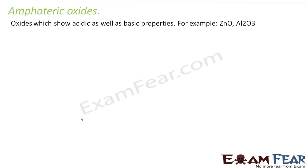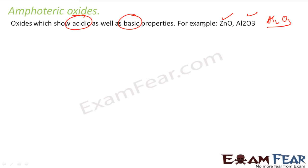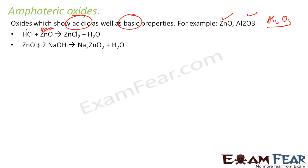We will now understand amphoteric oxides. Amphoteric oxides are those oxides which show both acidic and basic properties. For example, zinc oxide and Al₂O₃ — aluminum oxide — both are acidic and basic; they show both properties. In hydrochloric acid, if you put zinc oxide, you get zinc chloride plus water — here zinc oxide is acting as a base. But zinc oxide plus sodium hydroxide gives sodium zincate plus water — here zinc oxide is acting as an acid. So these oxides which show both acidic and basic properties are called amphoteric oxides.